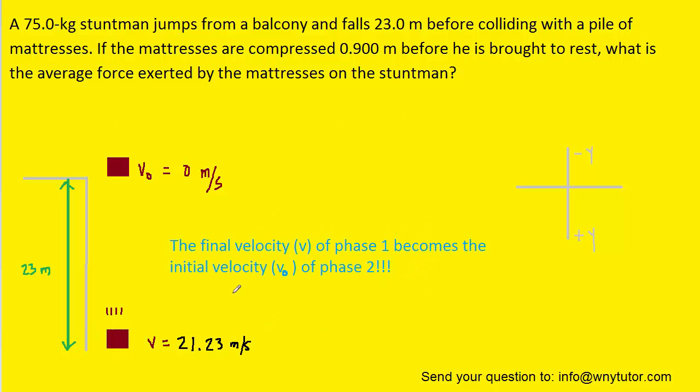Now before we move on to phase 2, we want to keep in mind the following idea which is the key to solving this question. The final velocity of phase 1 which we just calculated will become the initial velocity of phase 2. So we're going to take this 21.23 meters per second and we will use it as the initial velocity for phase 2 of the question.